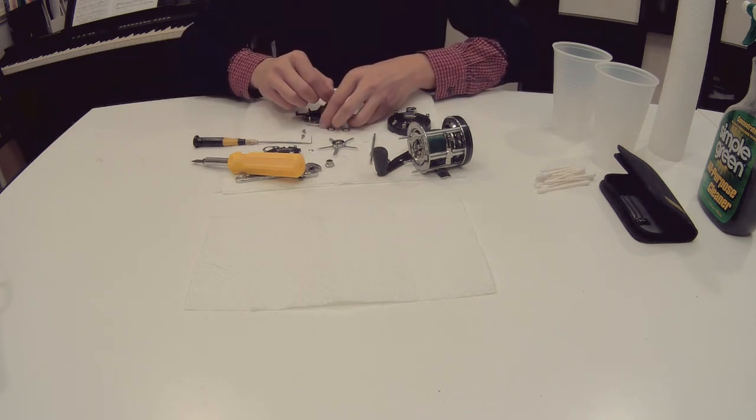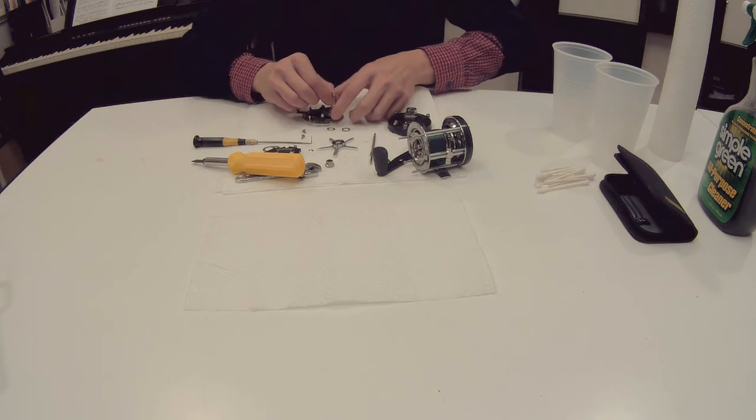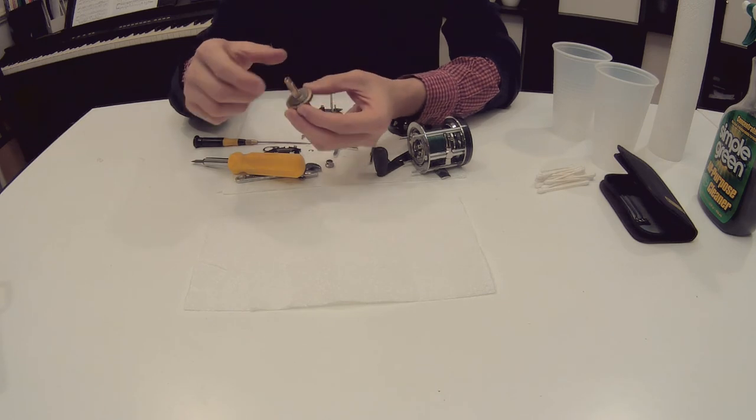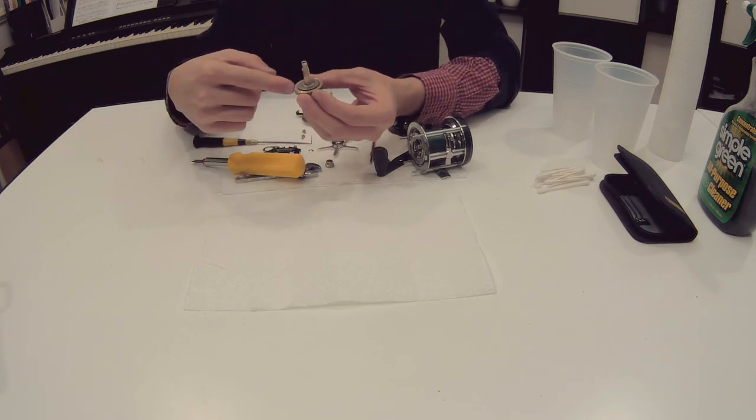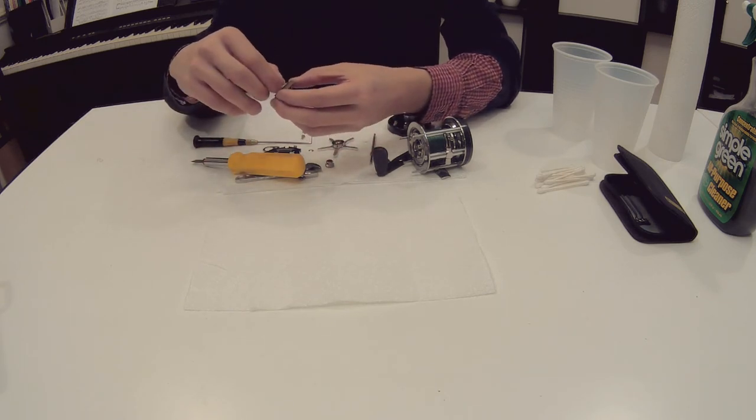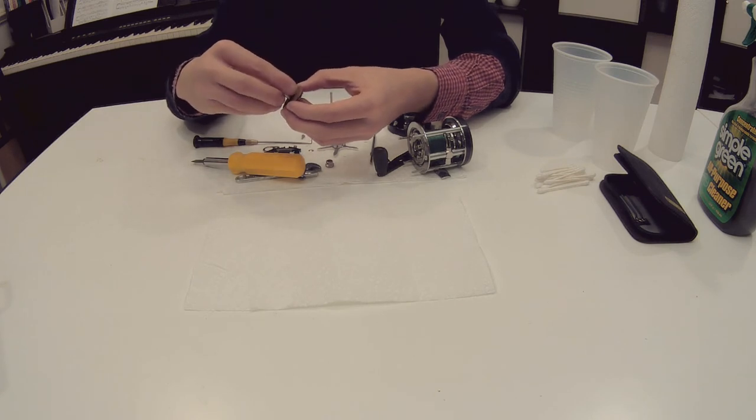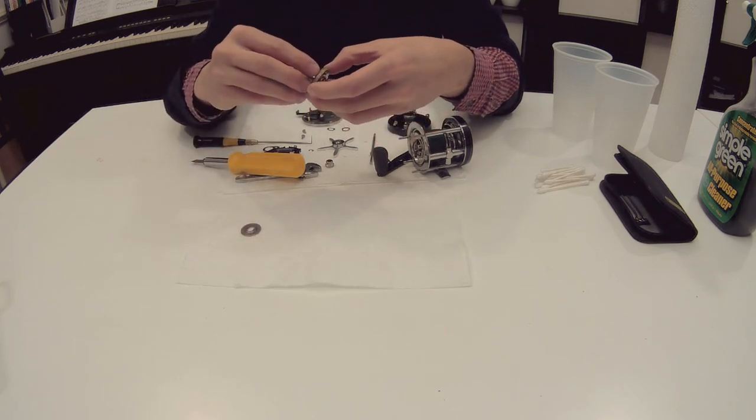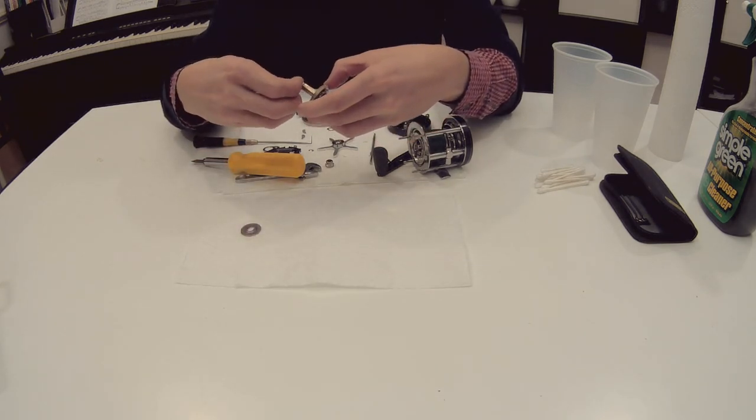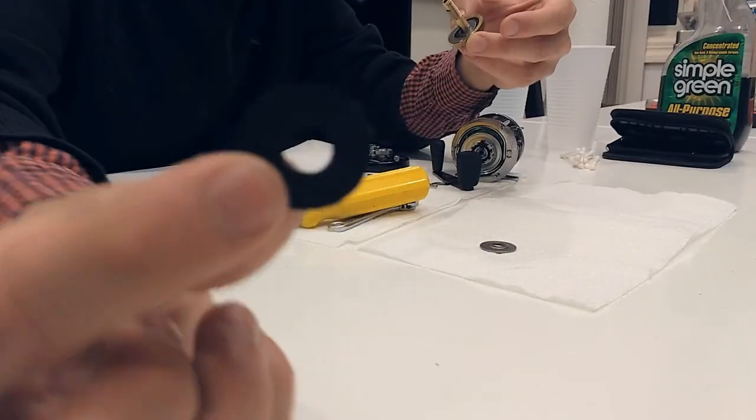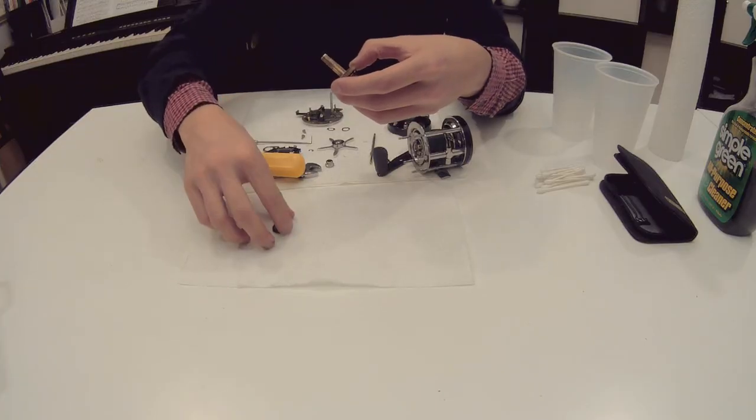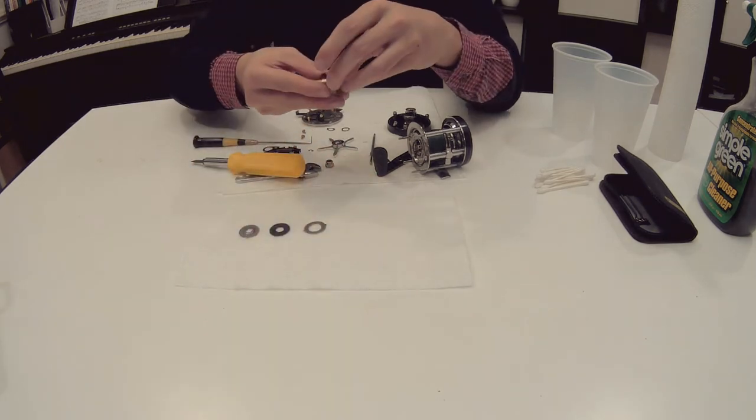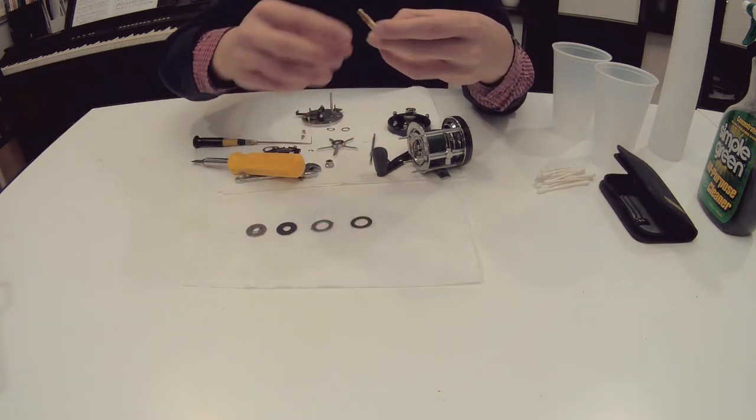And then your crank handle shaft and the main gear. So basically several washers and drag washers in there. Just take these off. These are carbon fiber washers. Lay them down in order so when you put everything back, you don't forget the order.